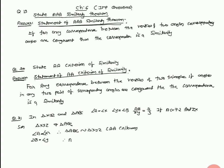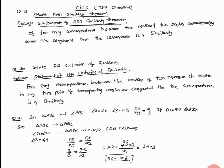Therefore AB upon XY equal to AC upon XZ. AB upon XY equal to 2 upon 3 is given, AC equal to 7.2 upon XZ. Therefore XZ equal to 7.2 multiply 3 upon 2 equal to 3.6 into 3 equal to 10.8. Therefore XZ equal to 10.8. This is the answer.